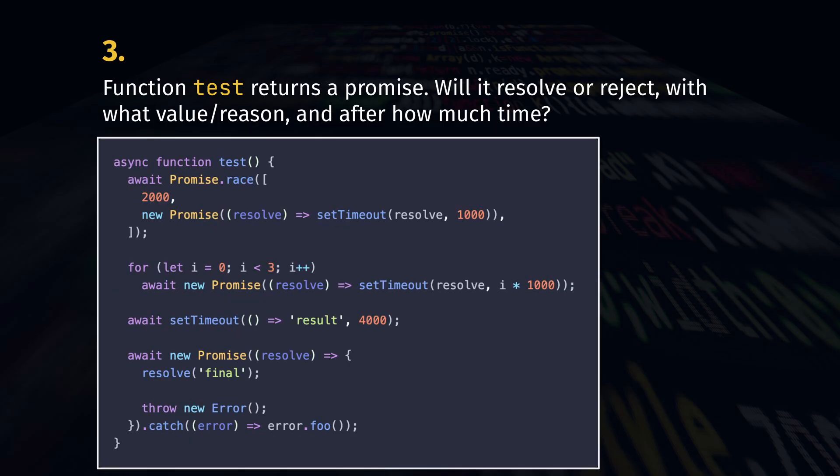Async await. The function test returns a promise. Will it resolve or reject? What will be the settled value and how long, more or less, until the promise is settled? We can assume that synchronous code executes immediately.